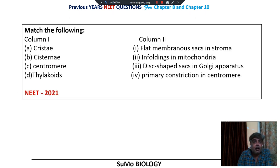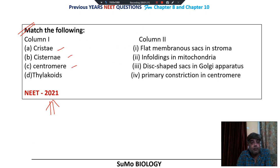Another question, also from NEET 2021 question paper. The question reads: match the following, column 1 and column 2 — Cristae, Cisternae, Centromere, Thylakoid.